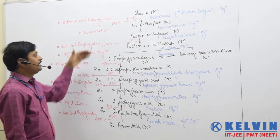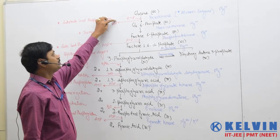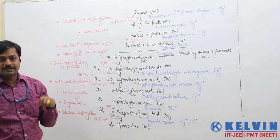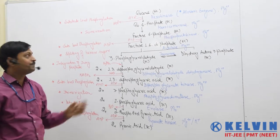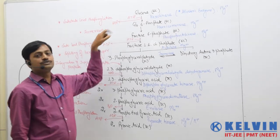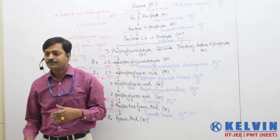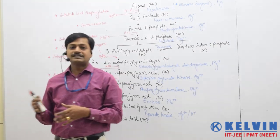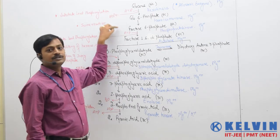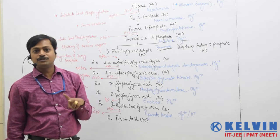If we summarize the use of ATP and its formation: initially two ATP molecules are used to make the sugar unstable — those steps are substrate level phosphorylation. One is the conversion of glucose to glucose-6-phosphate, and another is the conversion of fructose-6-phosphate to fructose-1,6-diphosphate. So two ATP molecules are initially used.